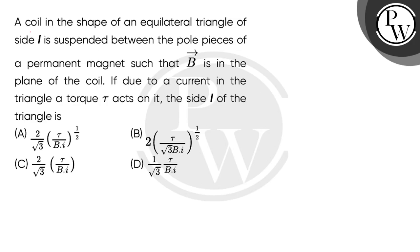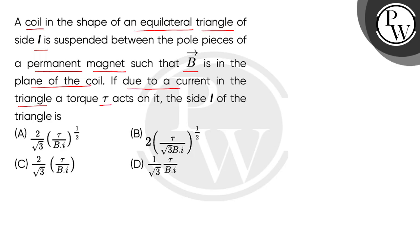Hello children, let's read the question. A coil in the shape of an equilateral triangle of side L is suspended between the pole pieces of a permanent magnet such that B vector is in the plane of the coil. If due to a current in the triangle a torque tau acts on it, then the side L of the triangle is?